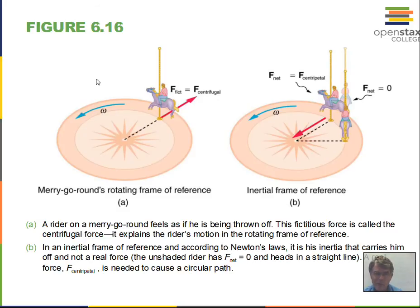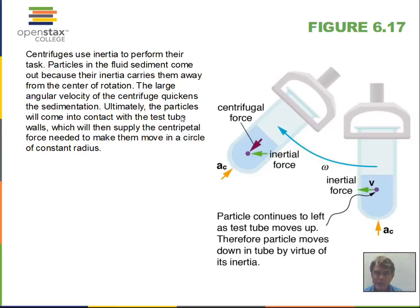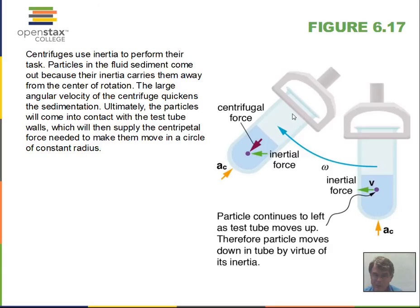Centrifugal force is a false, fictitious force. In a centrifuge, particles that are more massive have more inertia and want to travel in a straight line better than less massive particles. Consequently, more massive particles tend to accumulate on the outside of the circle, so the centrifuge can separate materials by density — low-density material on the inside, high-density material on the outside.